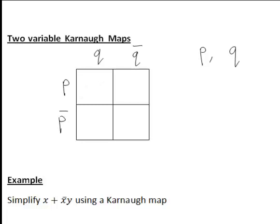And this first square in the first row and first column, for instance, is P and Q, written PQ. This next one is still in the row for P but now in the column for Q bar, so P Q bar.